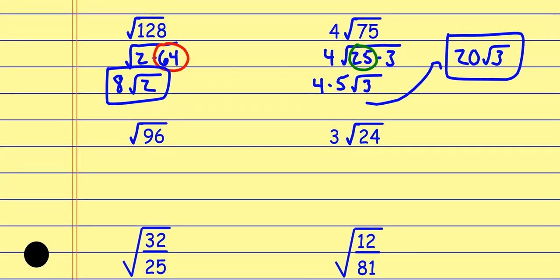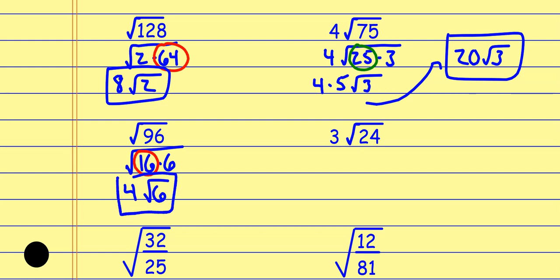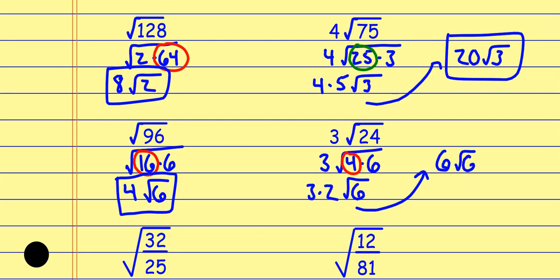For √96: the biggest perfect square that divides in is 16, so it's 16 times 6. The square root of 16 is 4, and the square root of 6 stays as √6. For √24 with a coefficient of 3: the perfect square that divides in is 4, so it's 4 times 6. The square root of 4 is 2, joining the 3 on the outside, and √6 stays inside. That simplifies to 6 root 6.